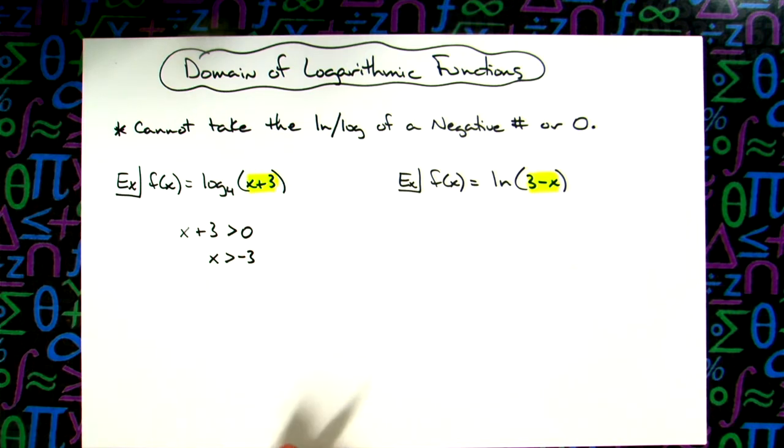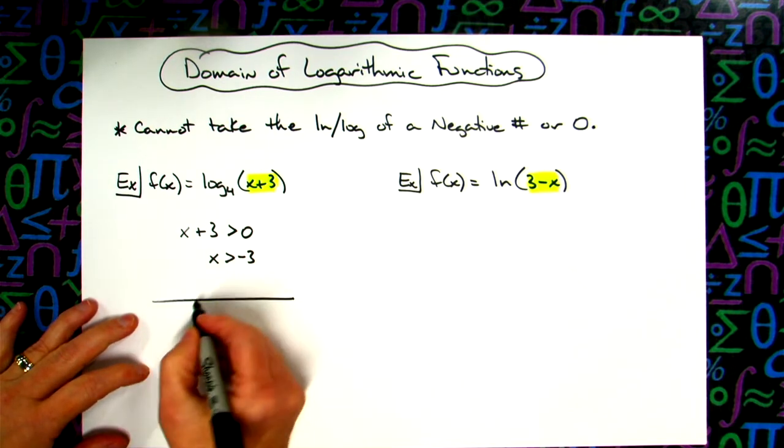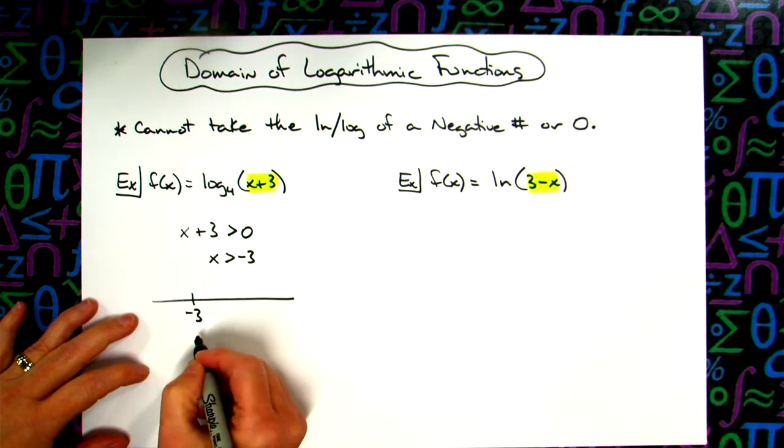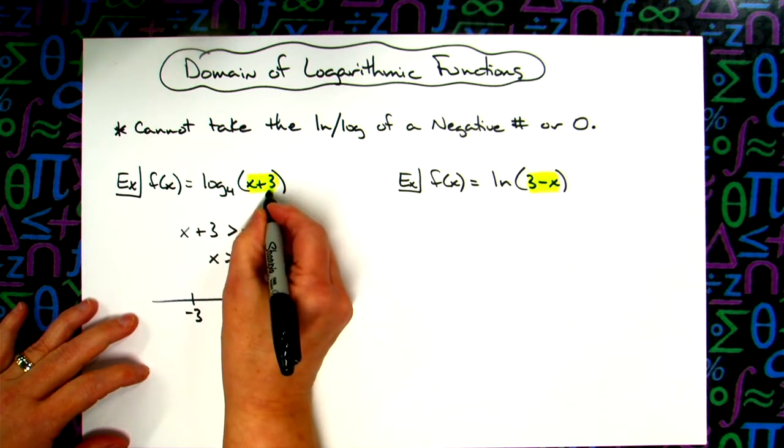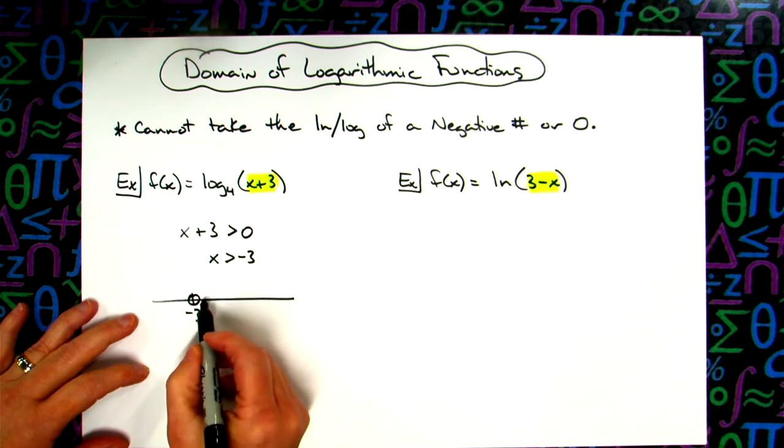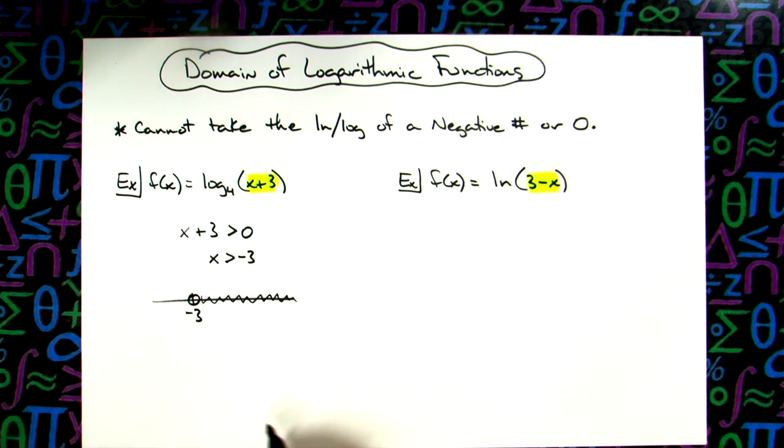That's going to tell me all the values that I can put in for that to be my domain. If I want to think about this from a number line standpoint here, here's negative 3. I cannot include negative 3 because negative 3 would make that zero. So there has to be an open dot there.